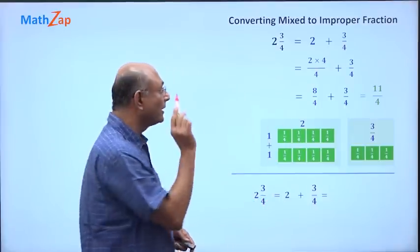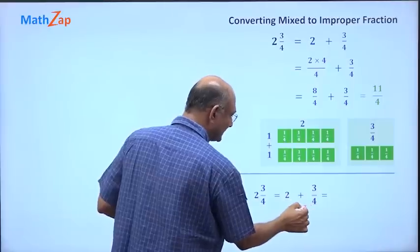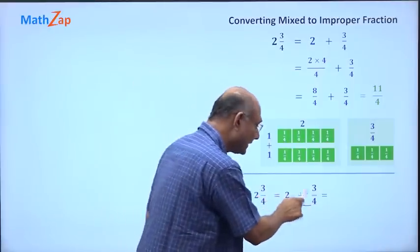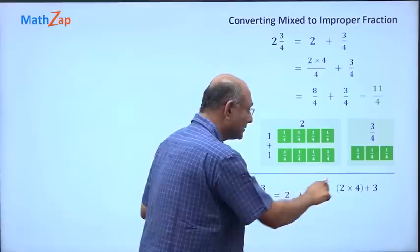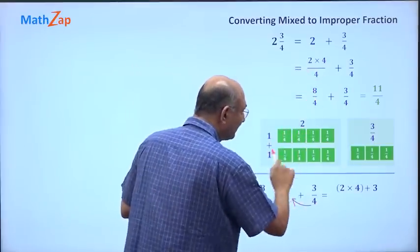2 and 3 by 4 is 2 plus 3 by 4. Notice this 2 into 4 is just this multiplication, right? The whole number into the denominator. So 2 into 4 plus 3. So 2 into 4 pieces, plus 3 more pieces, right?